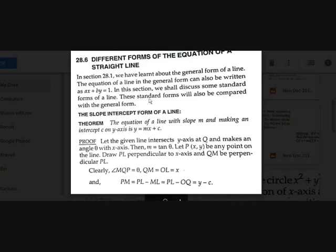Now, different forms of the equation of a straight line. We know the basic equation of a straight line: Ax + By = 1. There will be different forms. For example, someone will ask: there is a straight line of slope m making an intercept c on the y-axis — how will you find the equation? We need some formula to find it.